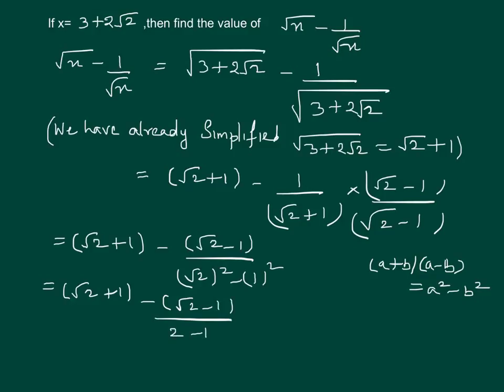Solving further, we get (√2 + 1) - (√2 - 1) in the numerator over the simplified denominator.